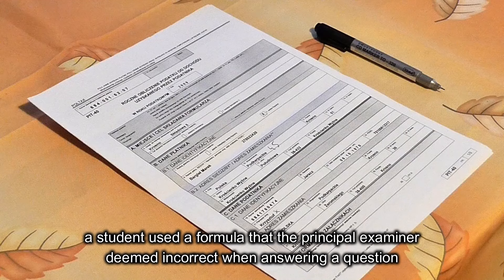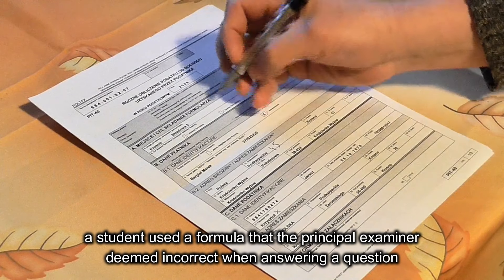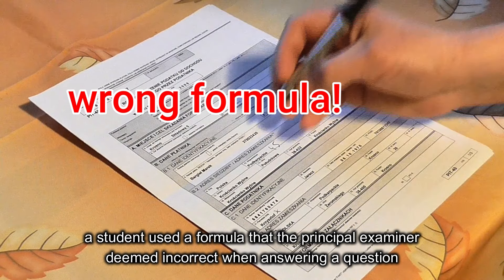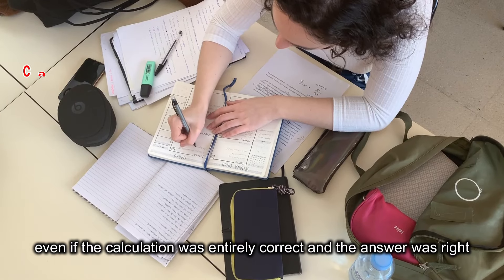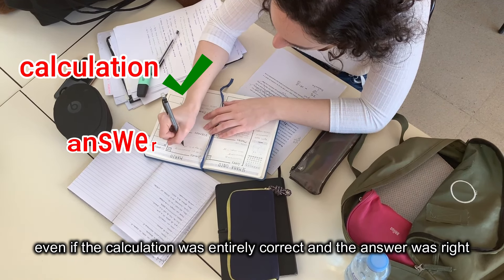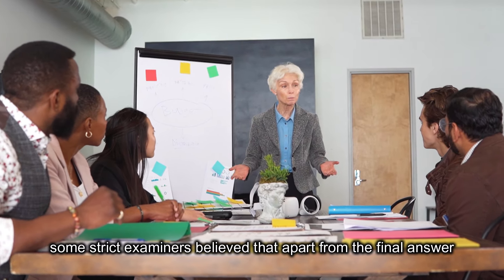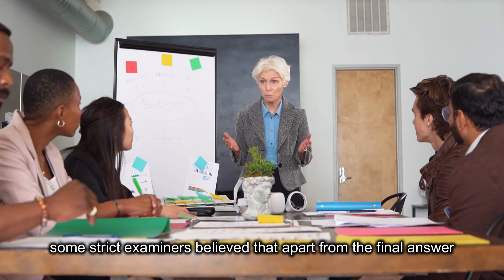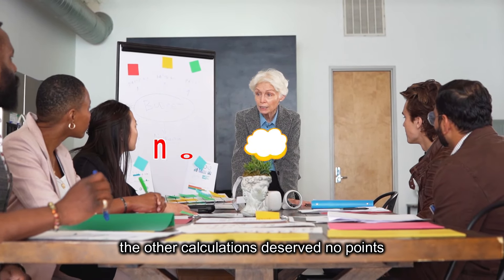Here's a real-life example. A student used a formula that the principal examiner deemed incorrect when answering a question. Even if the calculation was entirely correct and the answer was right, some strict examiners believed that apart from the final answer, the other calculations deserved no points.